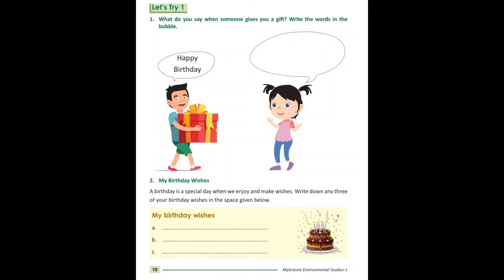My birthday wishes — yani meri janamdin ki ichchhaen. A birthday is the special day when we enjoy and make wishes. Yani birthday ek khaas din hota hai jis din hum enjoy karte hain aur apni ichchhaen rakhte hain. Write down any three of your birthday wishes in the space given below. First of all I will write: I want a robot car, I want a robot, and I want a football.